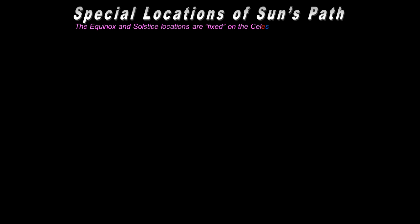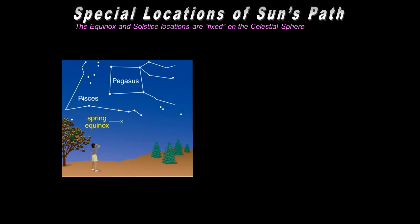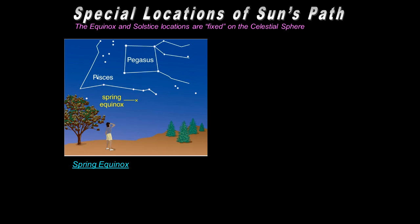Where is the sun on the celestial sphere at these special occasions — spring, summer, fall, winter? The most interesting is the spring equinox, which is the crossing of the celestial equator and the ecliptic. Currently it's located near the constellation Pegasus — specifically underneath the great square of Pegasus, which is a beautiful asterism in the sky.